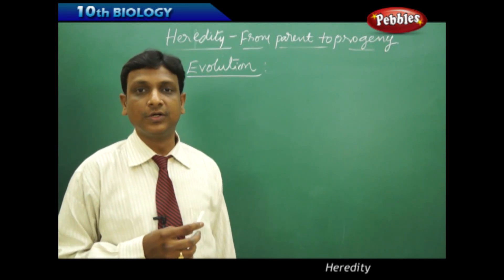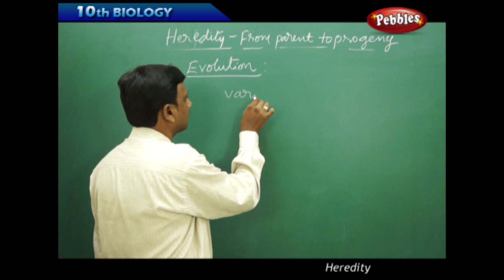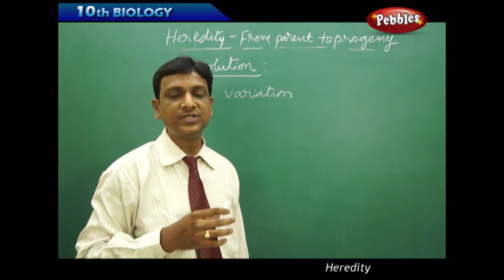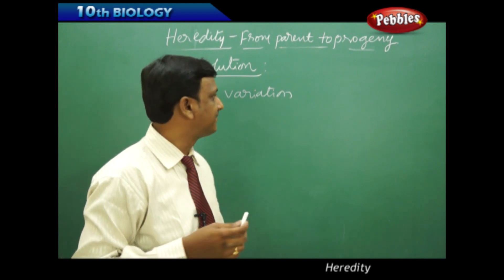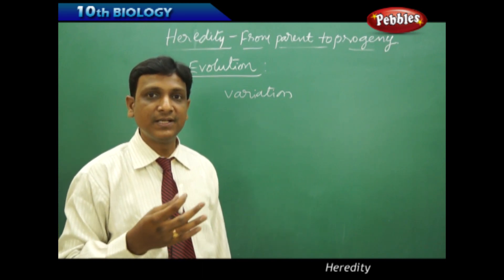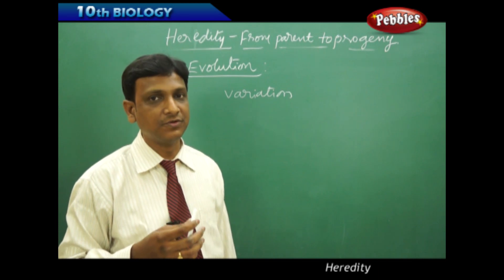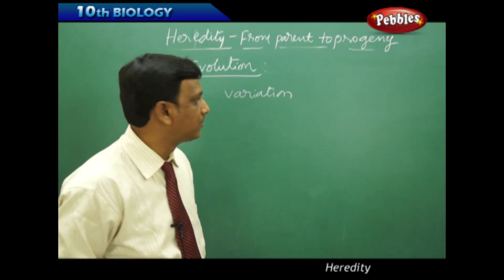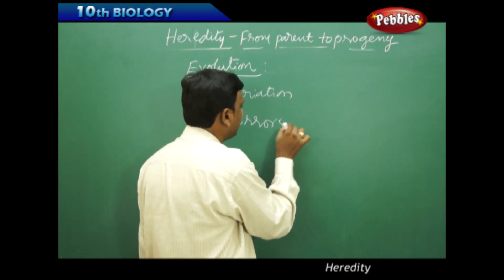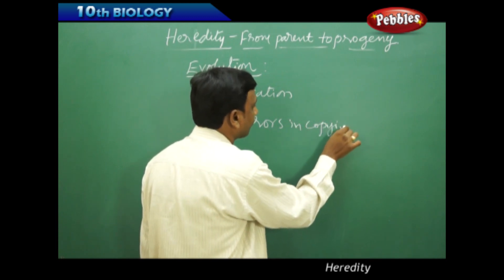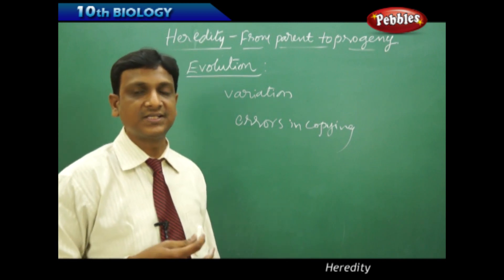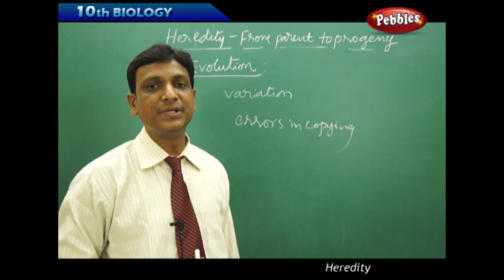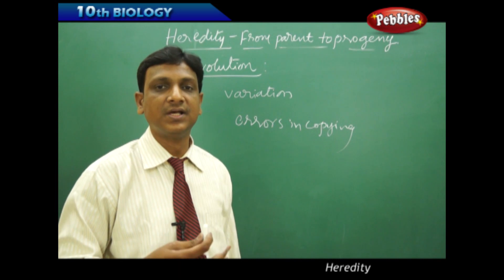What is evolution? We have discussed about variation. Variations are the differences in characters between closely related species. How do these variations take place? Variations take place during reproduction. During reproduction, male and female gametes fuse and the genes are copied — the DNA is copied. There may be certain errors in copying. Such variations accumulate in large numbers, leading to the formation of a new species. This way, evolution is a gradual process which goes on.